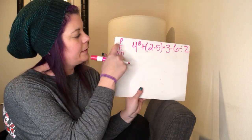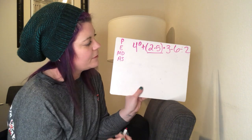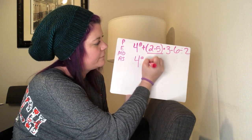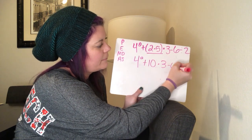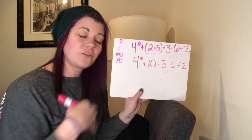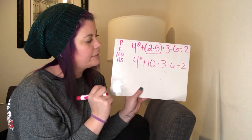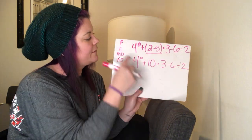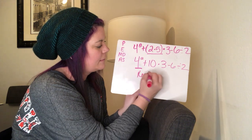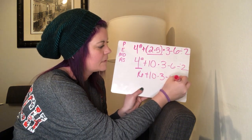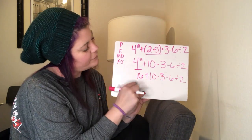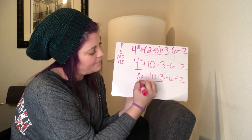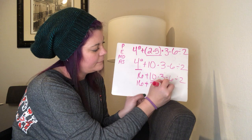Four squared plus two times five times three minus six divided by two. We start with the pyramid. Parentheses — there are parentheses, so I do that first: two times five is ten. Rewrite as four squared plus ten times three minus six divided by two. No more parentheses. There's an exponent: four squared is sixteen. Bring everything else down. Now multiplication and division from left to right — there's multiplication: ten times three is thirty.